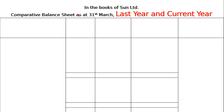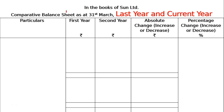Write 'Comparative Balance Sheet as at 31st March' — first year and second year (also called last year and current year). The format columns are: Particulars, First Year, Second Year, Absolute Change (increase or decrease in amount), and Percentage Change (increase or decrease in percentage).